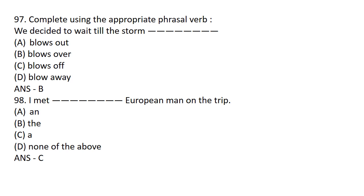I met dash European man on the trip. Option A: ON. Option B: THE. Option C: A. Option D: ABOVE. The correct answer is Option C — A. I met A European man on the trip.